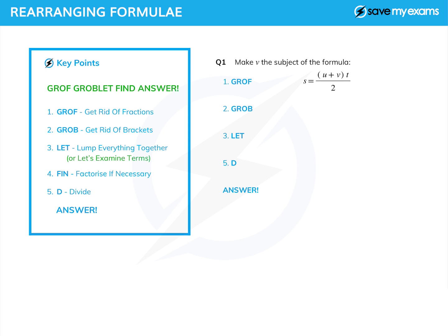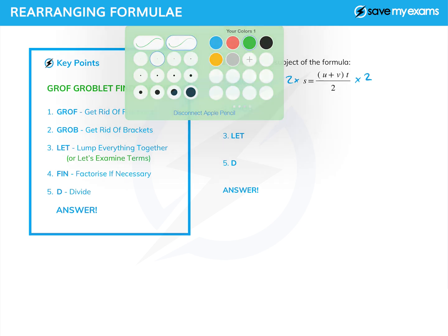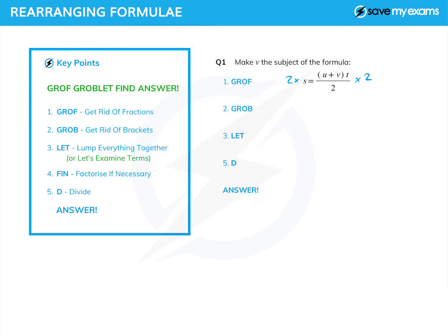How do we get rid of fractions? We always multiply by the bottom. If there's more than one fraction, we multiply by the smallest thing we can to get rid of the bottoms. So we multiply both sides by two — multiply that side by two and multiply that side by two. The whole point of doing that is that on the places with the fractions, the bottoms cancel. In this case, completely. And we get 2s is equal to (u + v) times t.